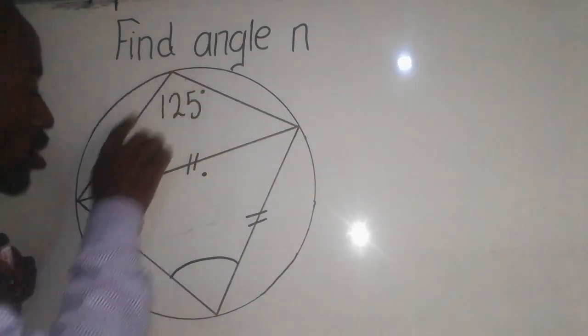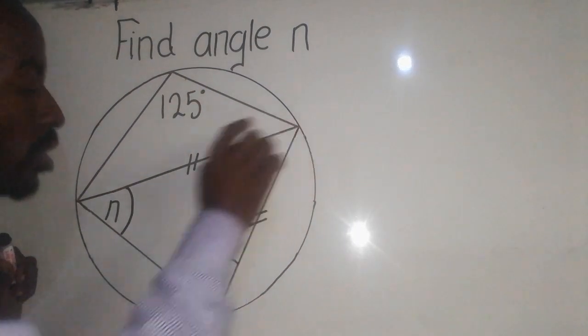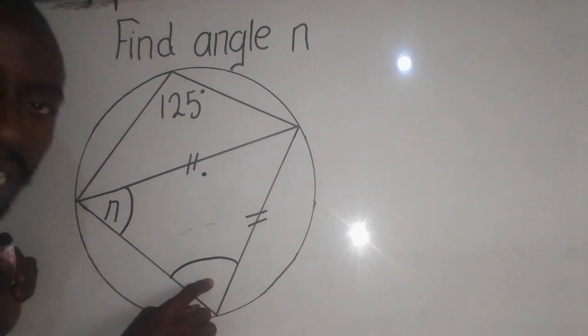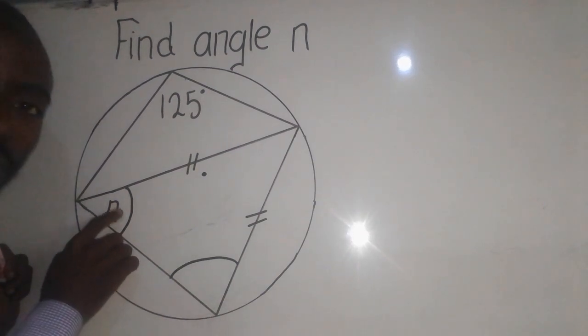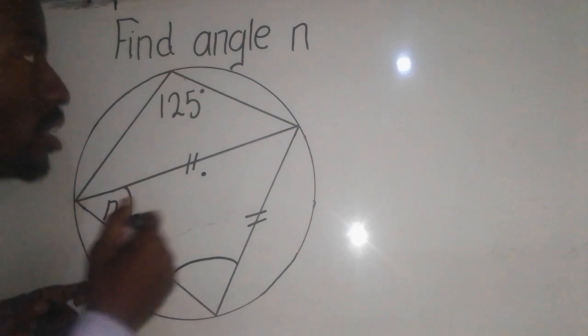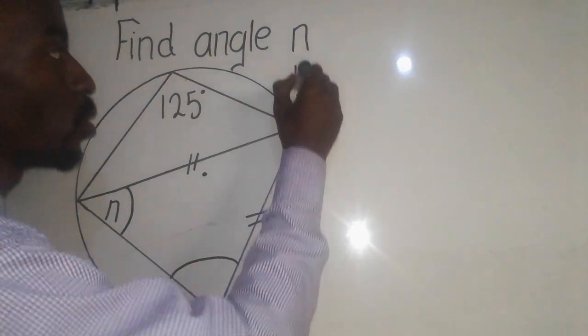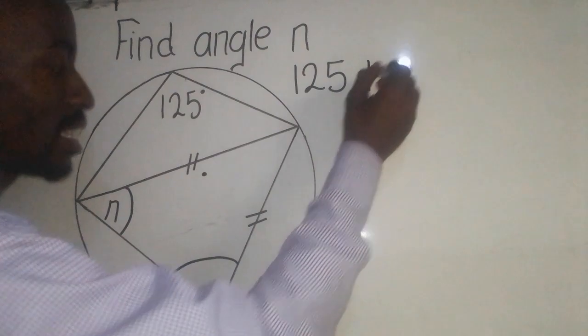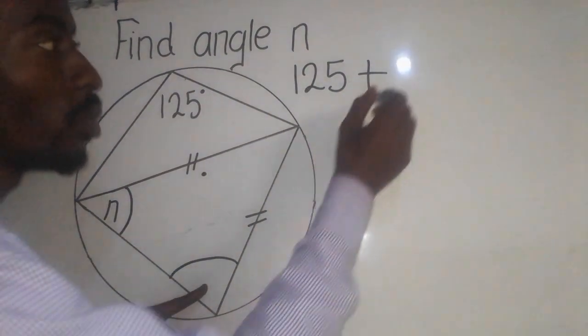So meaning I have to solve for this one, that's when I'll get the value for n. So it will be like this: we say 125 plus this one, this one we can just name it to be z, equal to 180.